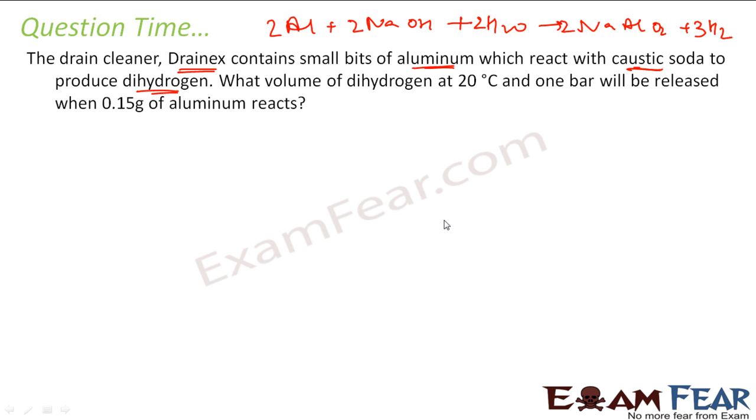Now, in this case, the question says what volume of dihydrogen, that is this guy, is produced at 20 degree Celsius, 1 bar of pressure when 0.15 gram of aluminum is reacted. With this equation, we know that at standard temperature and pressure, STP, the equation that 2 aluminum is 54 grams.